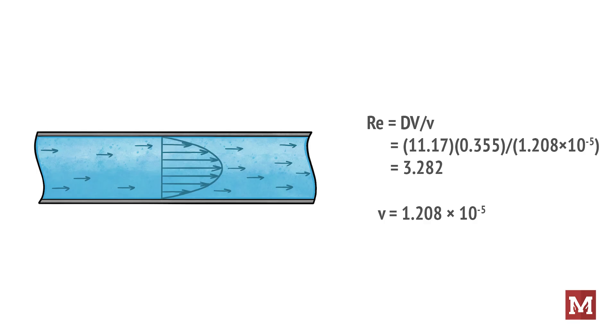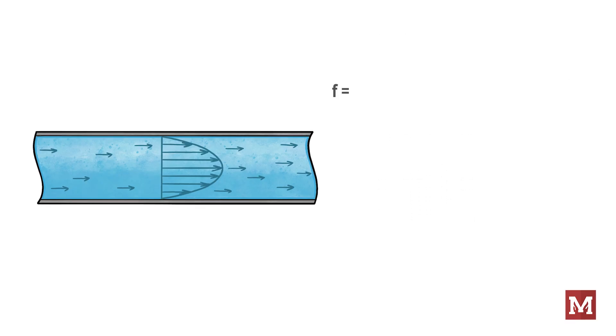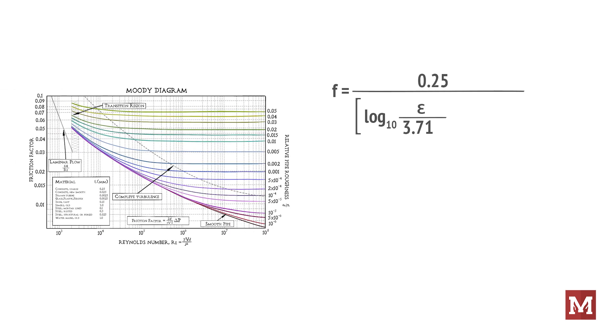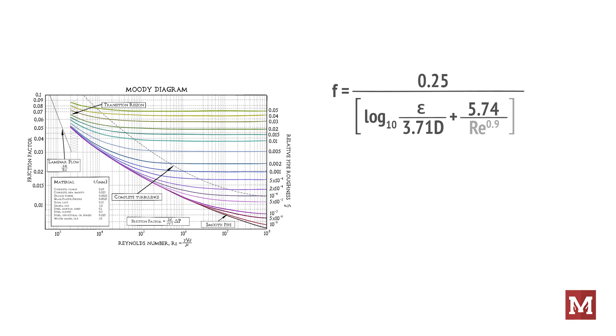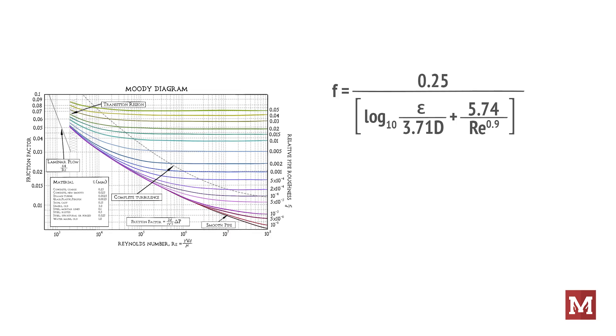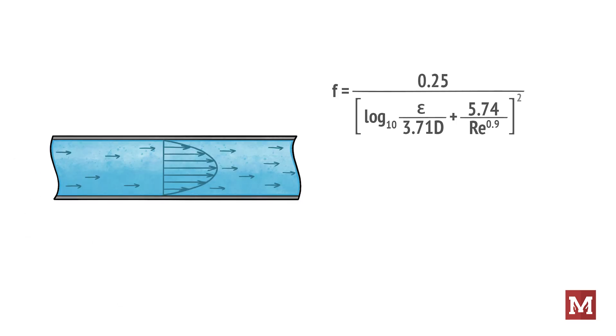If we take that information and plug it into the Jain equation we would then have calculated the friction factor for this pipe. The Jain equation is 0.25 divided by the log to the base 10 of the ratio between epsilon, the roughness, divided by 3.7 times the inner diameter of the pipe plus 5.74 divided by the Reynolds number raised to the 0.9th power. All of that is squared. So a bit of an equation, but the result from that helps us define what's typically going on here.